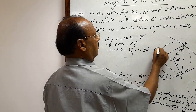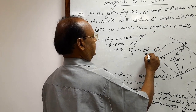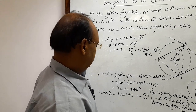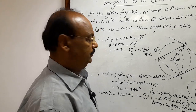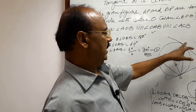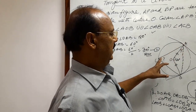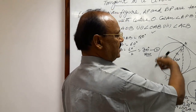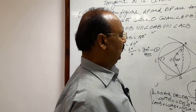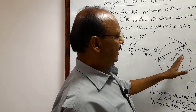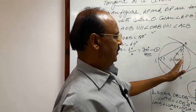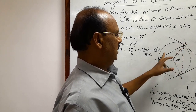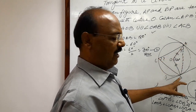So angle OAB equals 30 degrees — this is the answer to the second part. Now let us find the third part: we have to calculate angle ACB. In this circle, on the same segment, angle AOB and angle ACB are formed.